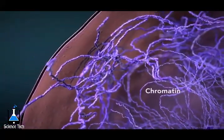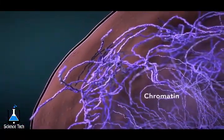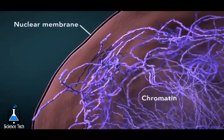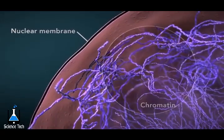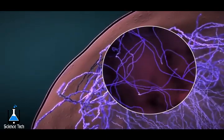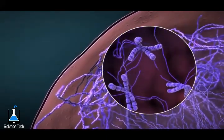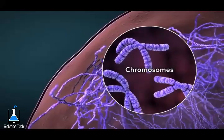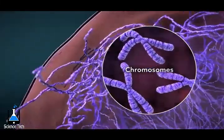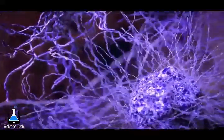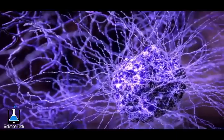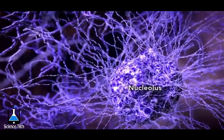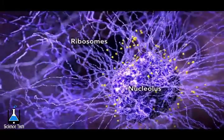Chromatin is the tangled, spread-out form of DNA found inside the nuclear membrane. When a cell is ready to divide, DNA condenses into structures known as chromosomes. The nucleus also contains a nucleolus, which is a structure where ribosomes are made.